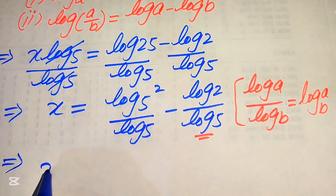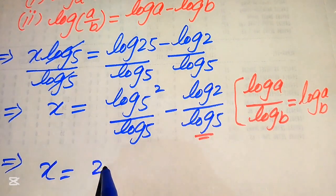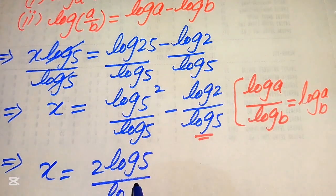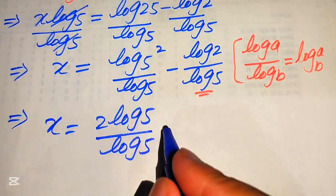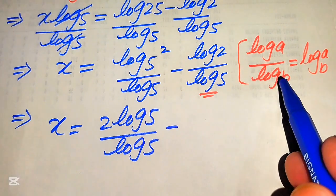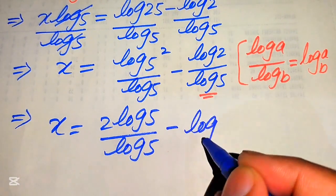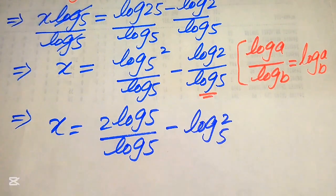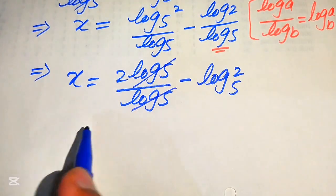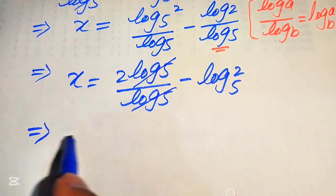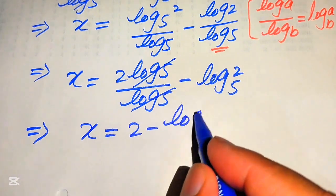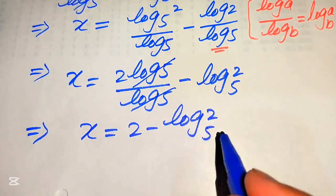So x equals 2 times log of 5 divided by log of 5. After applying the change of base property, this simplifies: log 5 is cancelled out by log 5, and we get the final value of x is equals to 2 minus log of 2 with base 5.